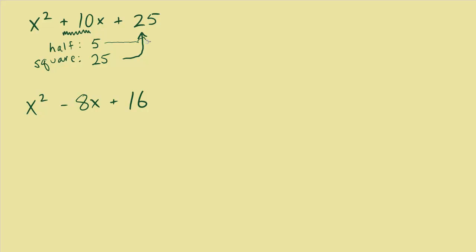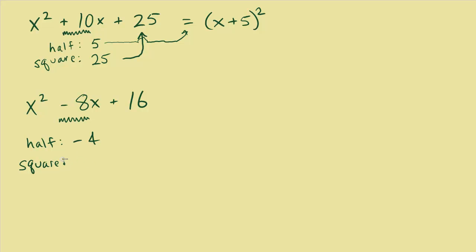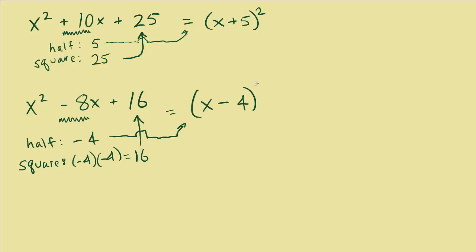The 5 we got from cutting the middle coefficient in half shows up in the factored form: x plus 5, squared. For the second trinomial, the middle coefficient is negative 8. Cut it in half to get negative 4, then square that — negative 4 times negative 4 equals positive 16, which is our third term. The number after cutting in half, negative 4, shows up in factored form: x minus 4, squared.